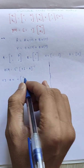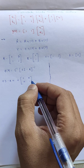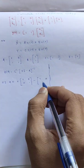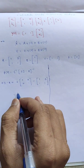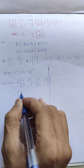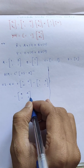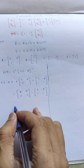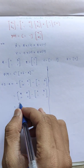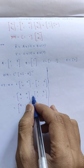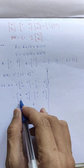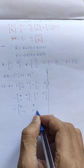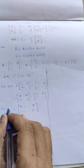S is the scalar, I is the identity matrix. So sI minus A, where the value of A is given. Multiplying s inside gives the matrix with s and 0, 0 and s. Subtracting matrix A gives: (s minus 1), 0, minus 1, (s minus 1). This is your sI minus A.